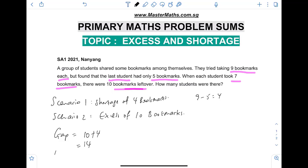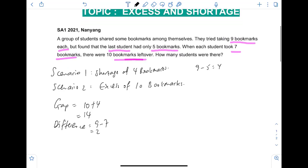And as for the difference, as the word suggests, difference means subtract. This is always a subtraction. We subtract both the scenario cases: first scenario nine bookmarks, second scenario seven bookmarks each. So nine minus seven, the bigger number minus the smaller one, and we'll have two. The last step, we'll be able to find the number of students.